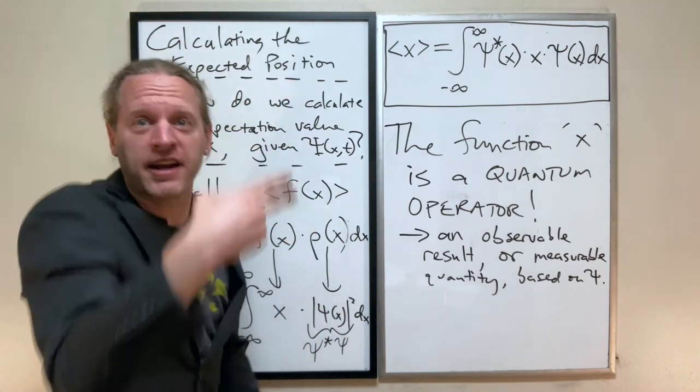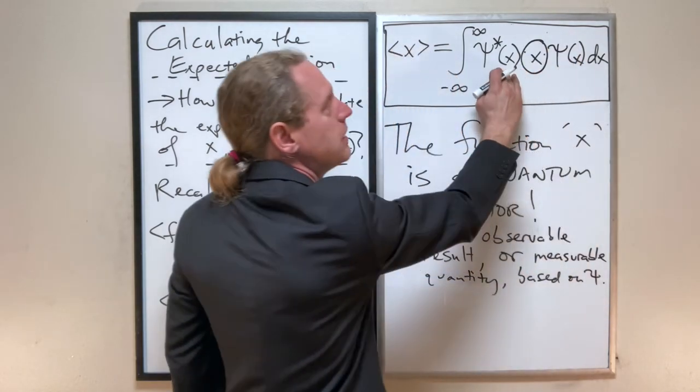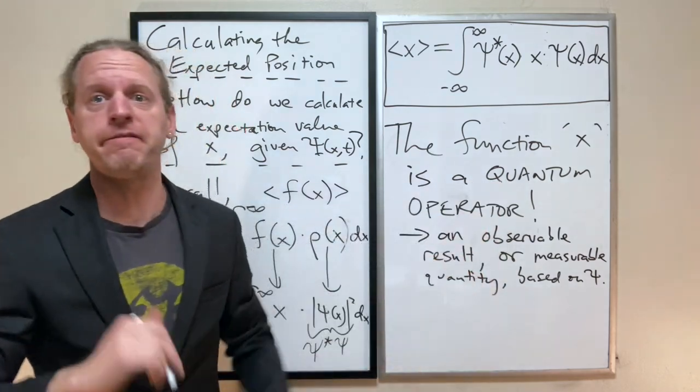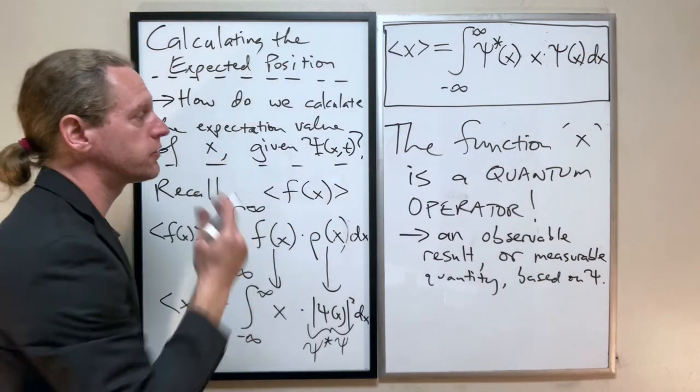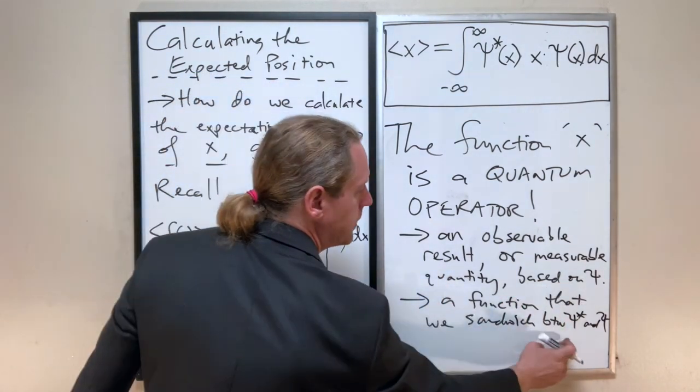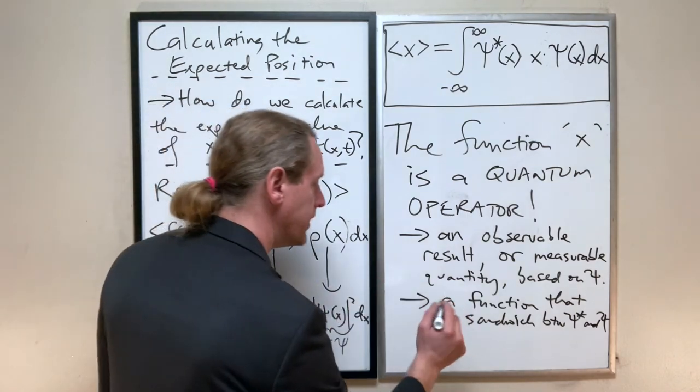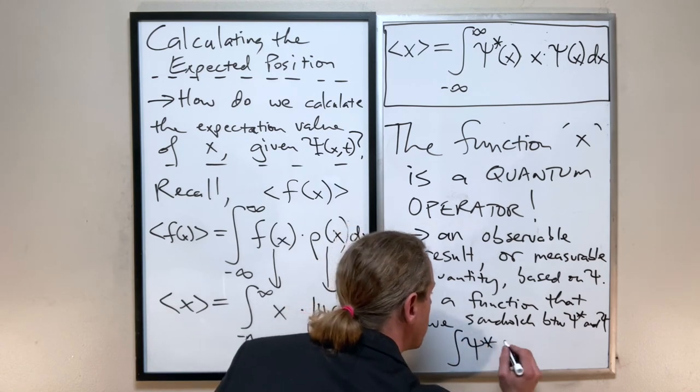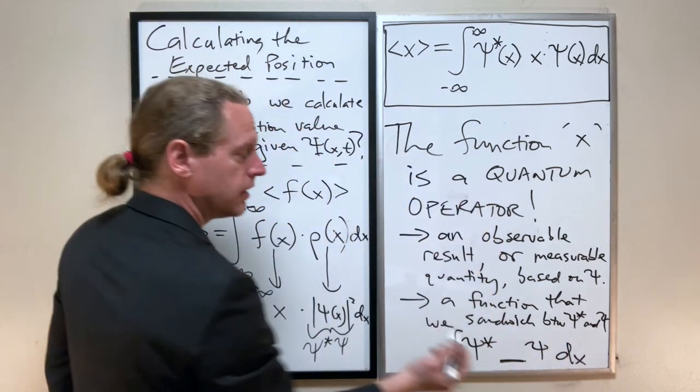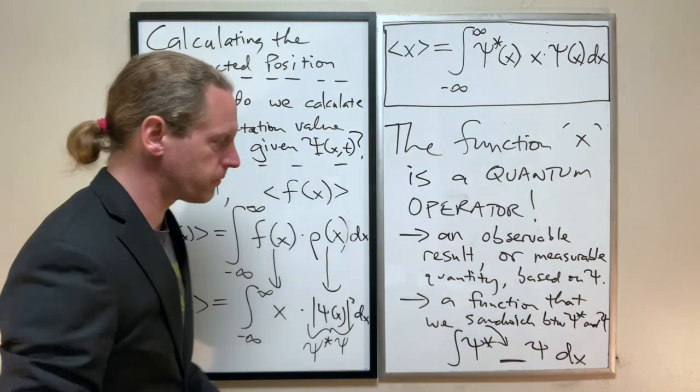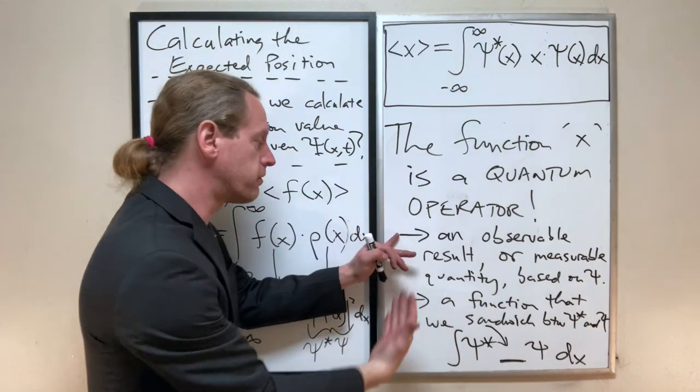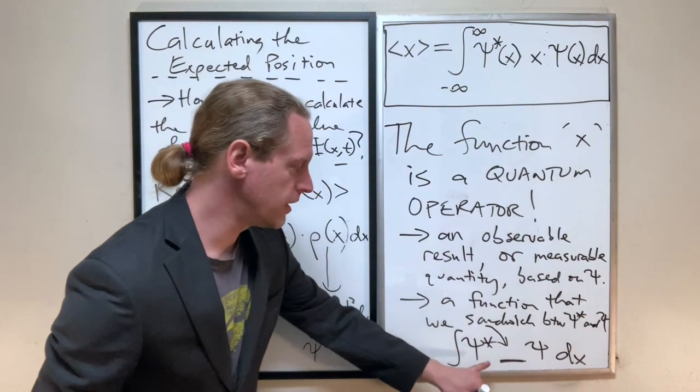Now, the other way of answering that, the second deeper level, is it's a function that you sandwich between psi star and psi. A quantum operator is a function that we put between those two things. So I'll make that a little bit more general here. It's a function that we can sandwich between psi star and psi. So in this case here, we take an integral, psi star, and then any function that we put in there, multiplied by psi dx, whatever we sandwich inside there, we now call a quantum operator. So we'll see more examples of that, like I said. But this word is going to come up over and over, and so think of it as both an observable question that we can ask, and a mathematical function that we just put between those two things.